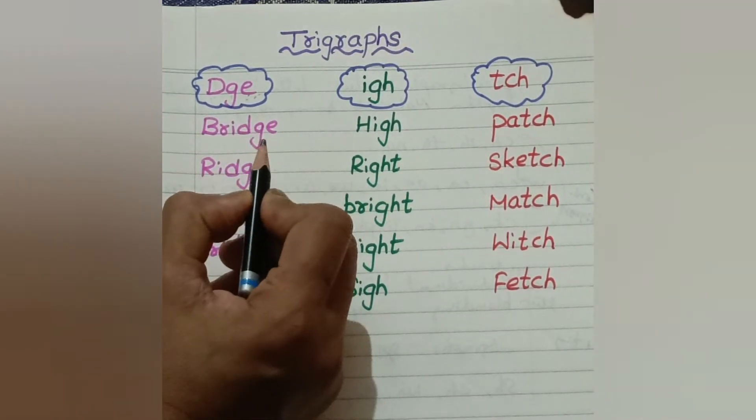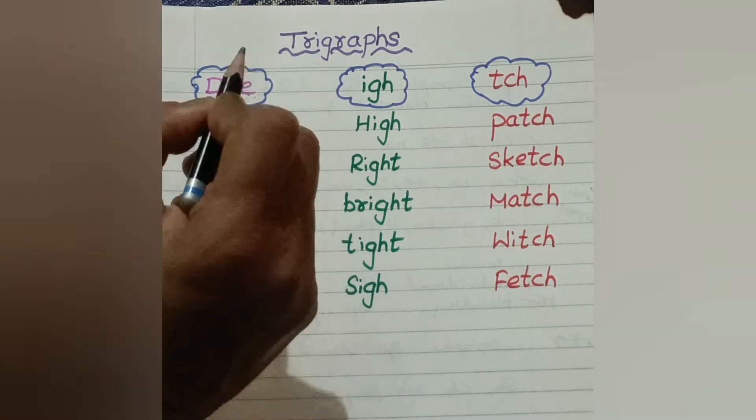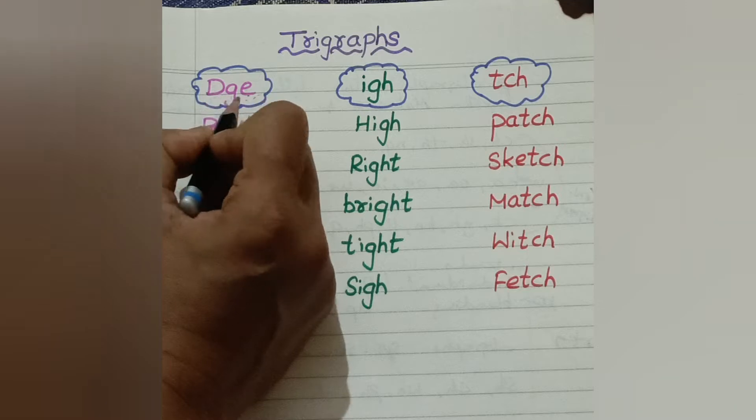A trigraph is a group of three letters - 1, 2, 3 - used to represent a single sound.